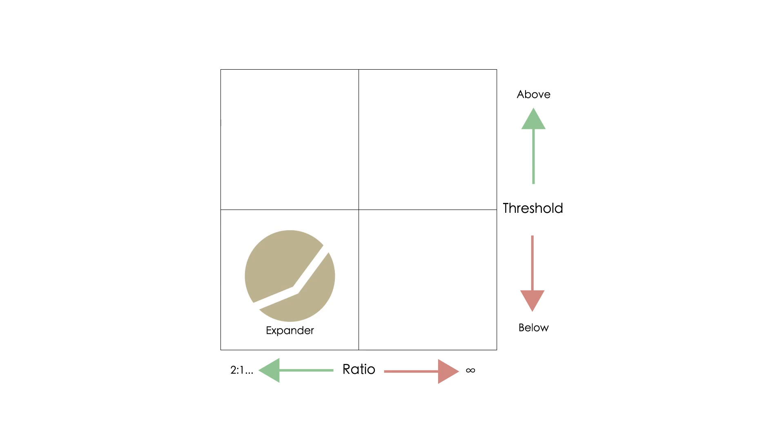An expander and a gate are very similar, just like a compressor and a limiter are similar. Let's take a look at all four of them.